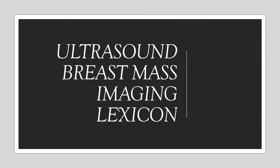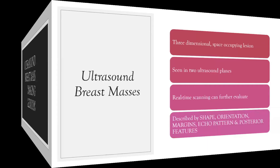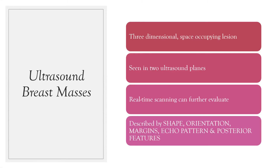Let's talk about how we describe breast masses on ultrasound using the BIRADS lexicon. Breast masses are three-dimensional space-occupying lesions, which means you need to see them on two planes on ultrasound. Real-time scanning can help further evaluate, especially when coupled with physical exam. On our reports, we describe the shape, orientation, margins, echo pattern, and posterior features of the mass, which helps determine management considerations going forward.